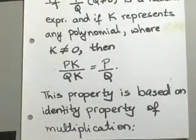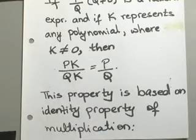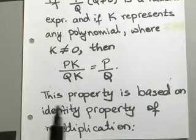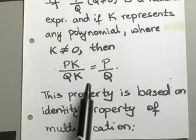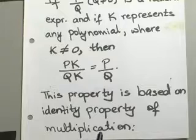How is that possible? How does this fundamental property of rational expression work? When you multiply your numerator and denominator by the k, you still end up with p over q. The idea is this property is based on the identity property of multiplication.